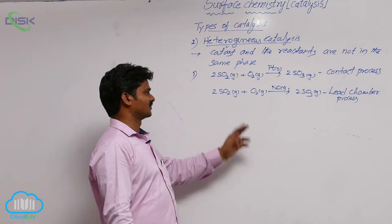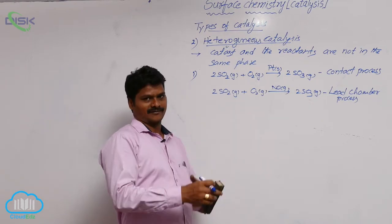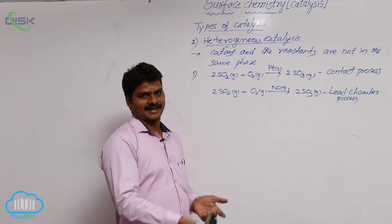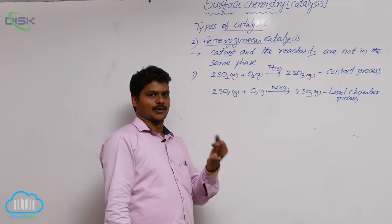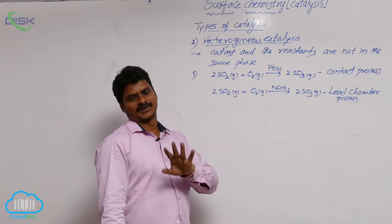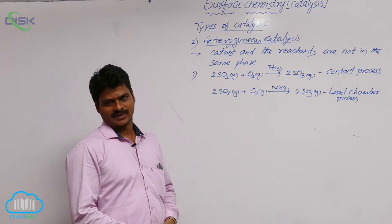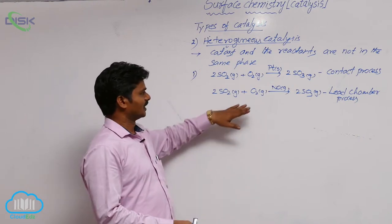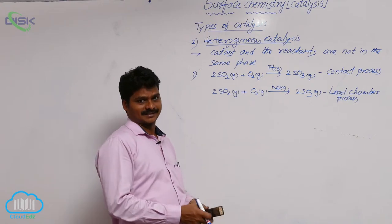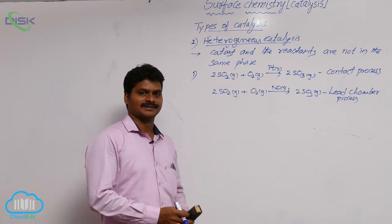This is a very important topic for objective questions. A question may be given: which of the following is a homogeneous catalysis? Options might include lead chamber process, contact process, Haber's method, and Ostwald's process. You have to identify that the lead chamber process is homogeneous catalysis, whereas the contact process is heterogeneous.